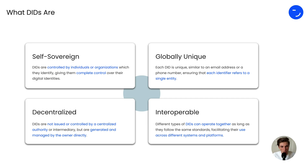They are globally unique, like email addresses, so each identifier only refers to one single entity. They are completely decentralized, so they are issued and generated by the owner directly. They are interoperable, meaning they can work together if they work on the same standards and across ecosystems.